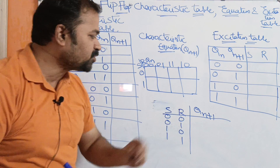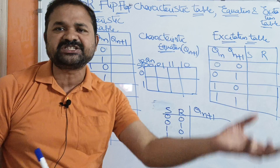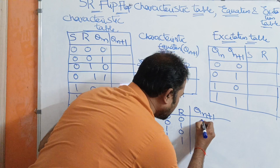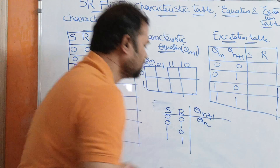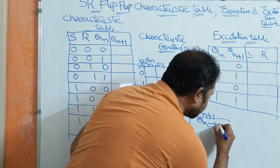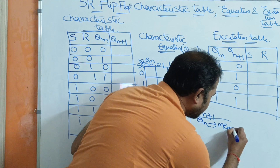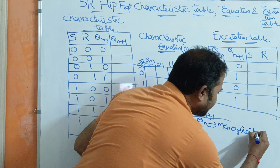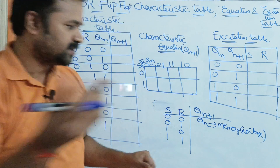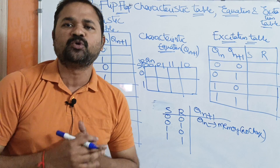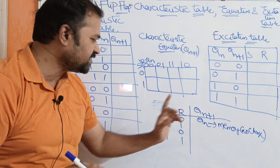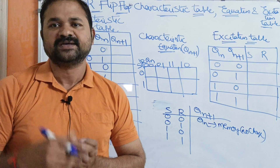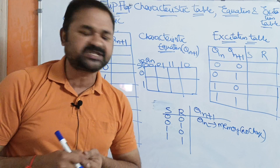If the inputs are 00, then the next state output is similar to the current state output — that means output is Qn. We can use this for memory. There is no change in the previous output; previous output as well as present output, both are same. So for 00, Qn equals Qn+1 — next state output is similar to the present state output.